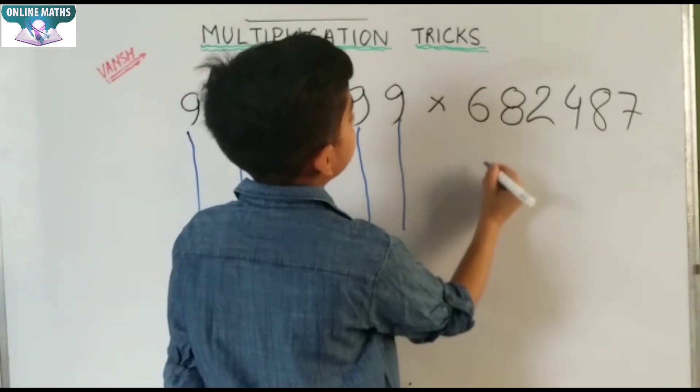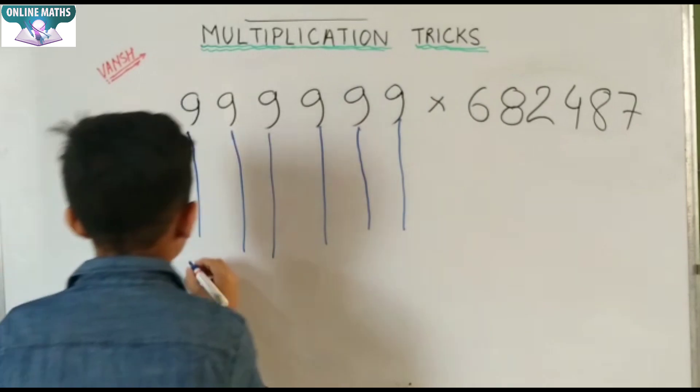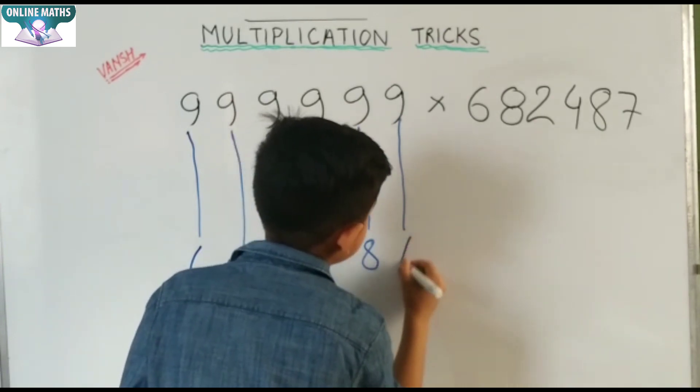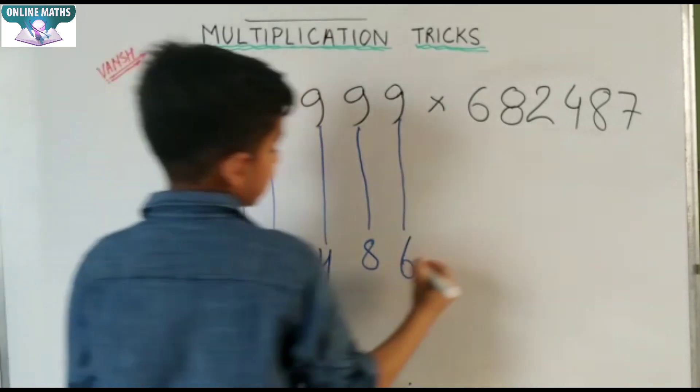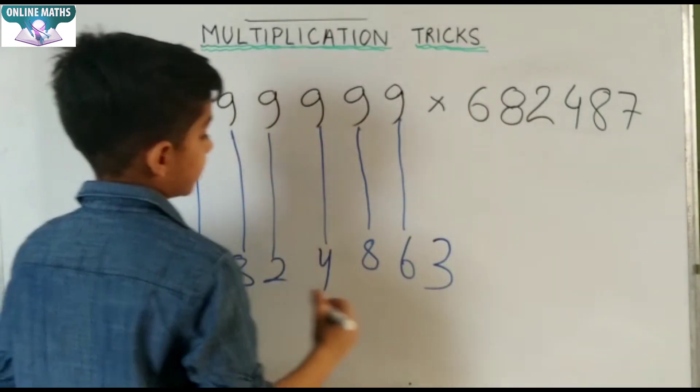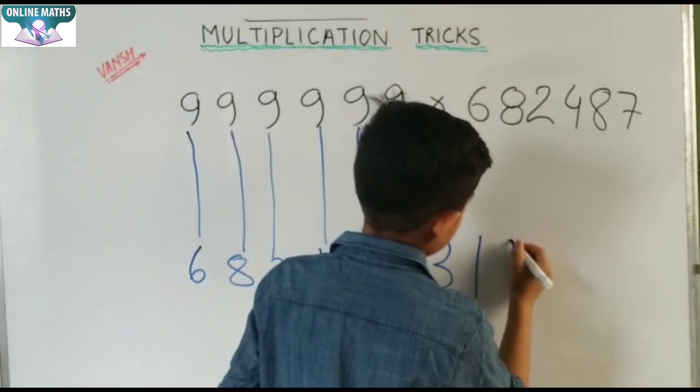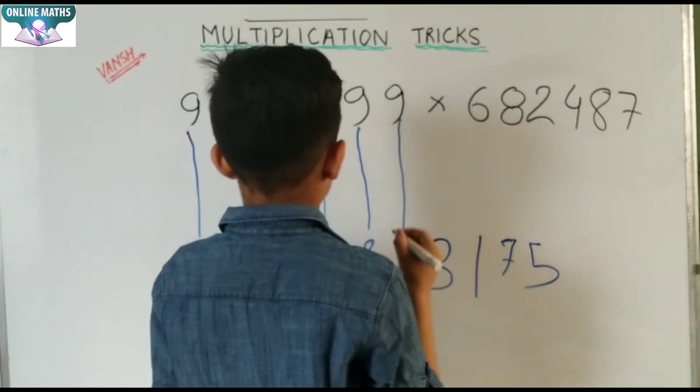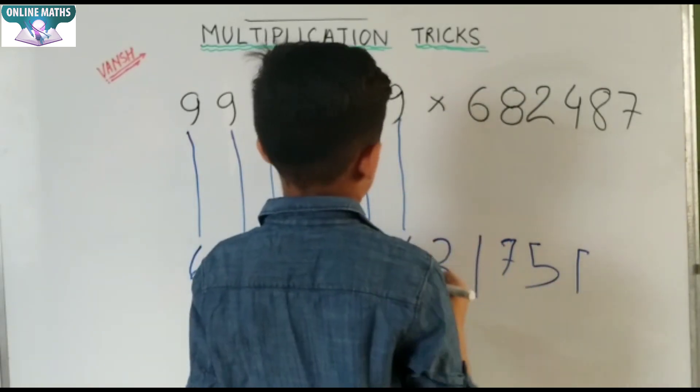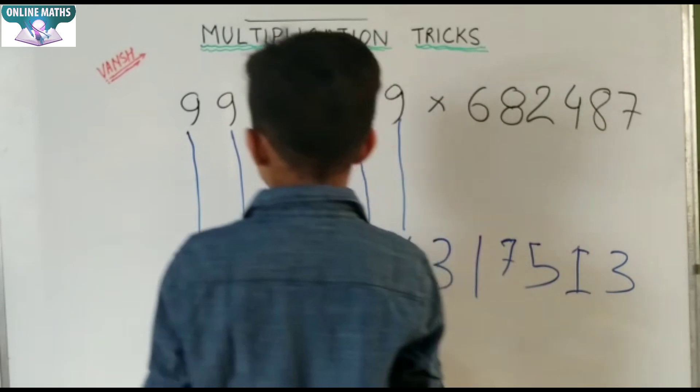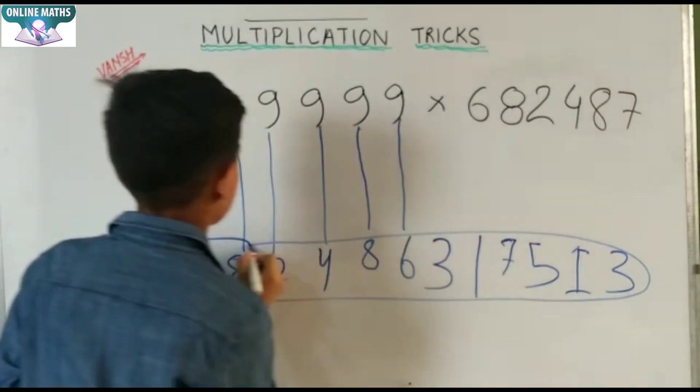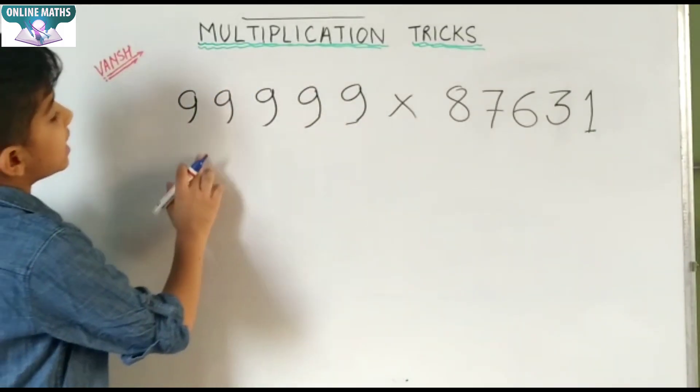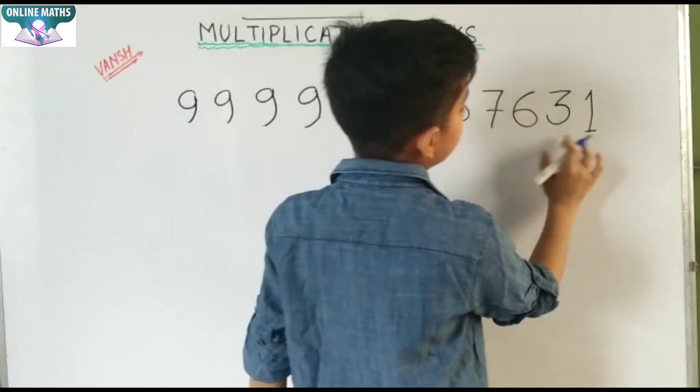One lesser number of 682487 is 682486, then minus 9 minus 6 is 3, 9 minus 8 is 1, 9 minus 2 is 7, 9 minus 4 is 8, 9 minus 8 is 1, 9 minus 6 is 3, 9 minus 8 is 1, 9 minus 7 is 2.